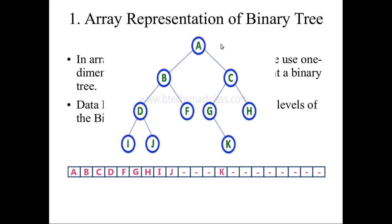At level 0, only A is there, so I have represented A at the 0th position. This is 0th level, this is first level. If you go to the first level you have to go from left to right. So we take B first because B is the first left element, then we take C. Next we go to level 2 — there is D, F, G, H. So D, F, G, H. Then level 3 — in level 3 there is I and J.